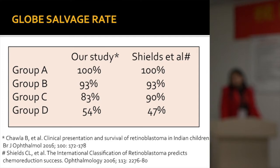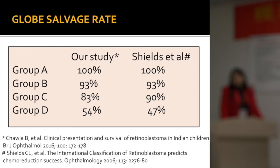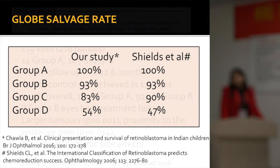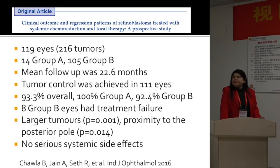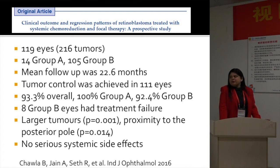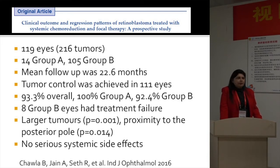At our center we have published the globe salvage rates. We found excellent globe salvage rates with Group A and Group B eyes, and satisfactory globe salvage rates with Group C. With Group D it wasn't as good, but it is similar to reports published from other centers worldwide. There is almost a 50% likelihood of saving the globe with combined therapy for Group D. We recently published another paper studying clinical outcomes and regression patterns. We included only Group A and Group B eyes. We had a good tumor control rate of 93% overall — 100% for Group A and 92.4% for Group B — using systemic chemoreduction and focal therapy.